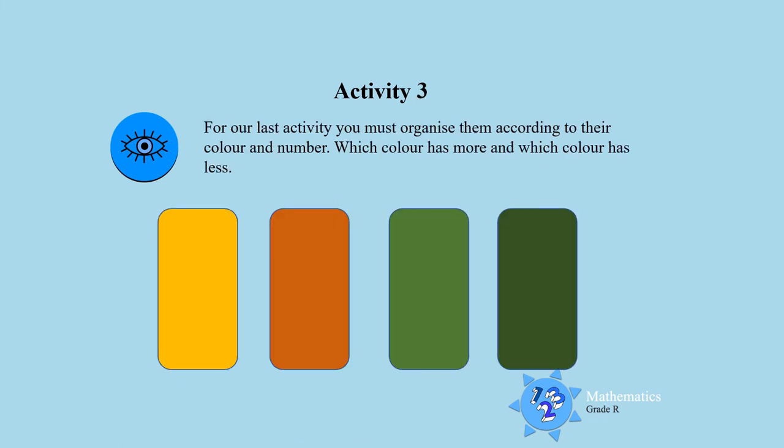Activity three: for our last activity, you must arrange them according to their color and the number. So, how many of each of these colors can you find? How many yellow leaves? How many brown leaves? How many light green or dark green leaves could you find?